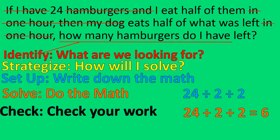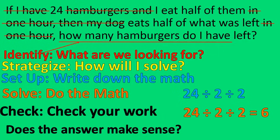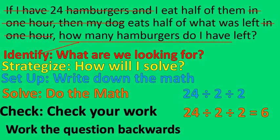My final step is to check my work. There are a couple of things you can do. First, ask yourself: does this make sense? I started with 24 hamburgers, I ate half, my dog ate half of that — does having 6 left make sense? Yes. If the answer were 600, it wouldn't make sense to have more at the end than you started with. You can also work the question backwards using inverse operations. If you start with 6 and double it twice: 6 times 2 is 12, 12 times 2 is 24. It works! That's inverse operations — working the question backwards.